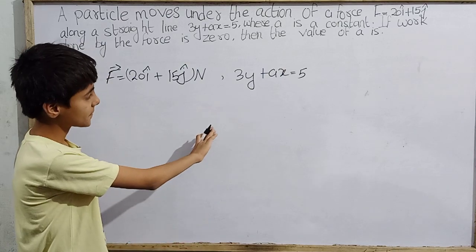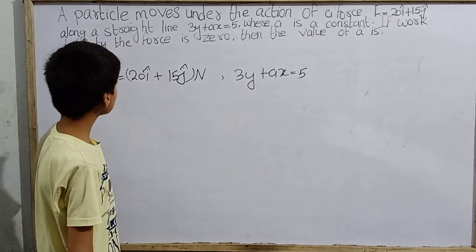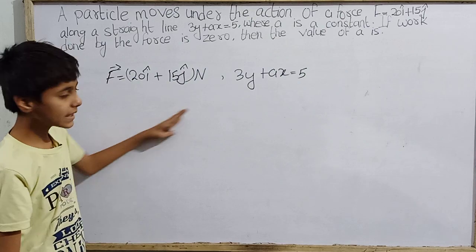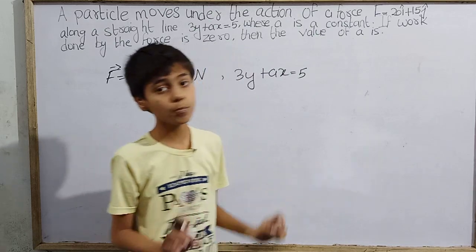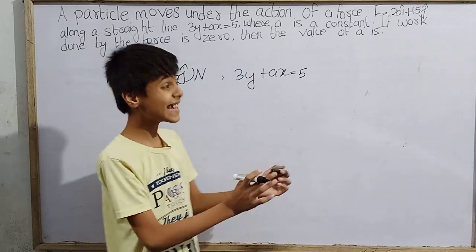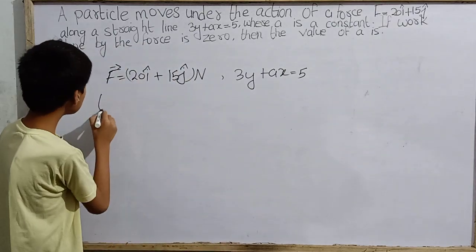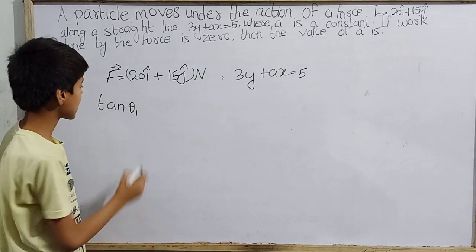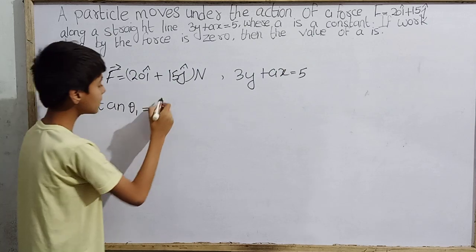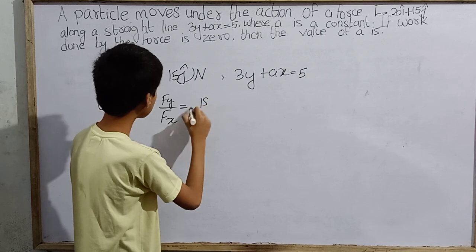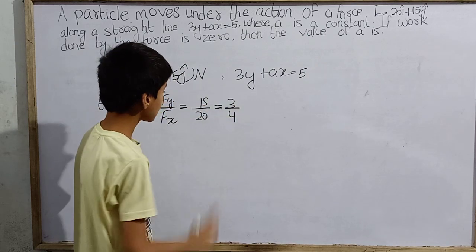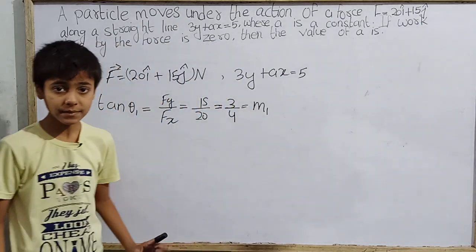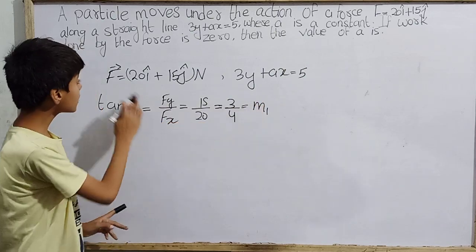We have to find the value of a. First, I suppose the direction — we need to find the slope. Theta-1 is the angle that the force vector F makes with the x-axis, so tan(theta-1) equals the y-component of F divided by the x-component of F, which is 15 by 20, that is 3 by 4. So m1, meaning slope of the force vector, equals 3 by 4.